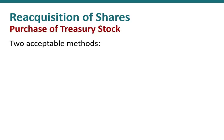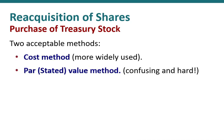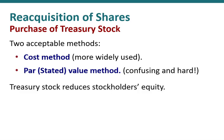There are two acceptable methods for accounting for treasury stock. One is the cost method, which is more widely used, and the other is the par value or stated value method. That method is described in your textbook and appendices, but we won't be covering it here. The important thing to keep in mind is that treasury stock reduces stockholders equity. Let's take a look at a quick example.